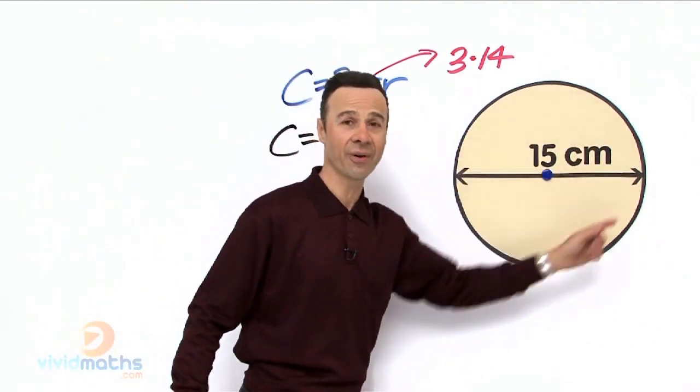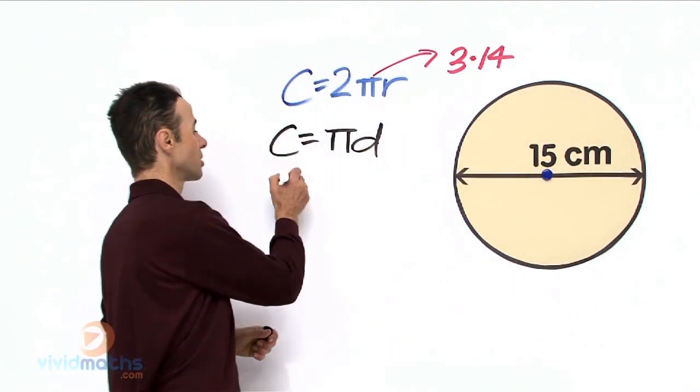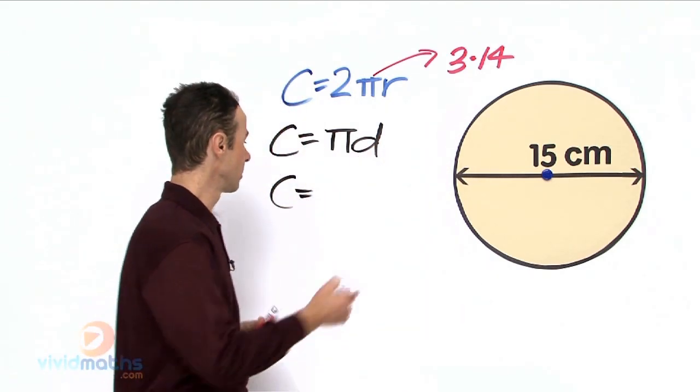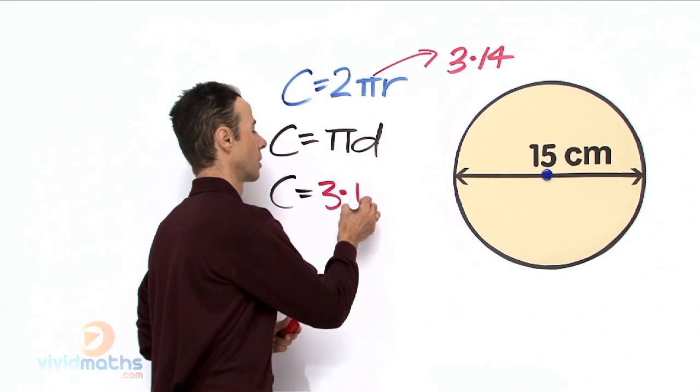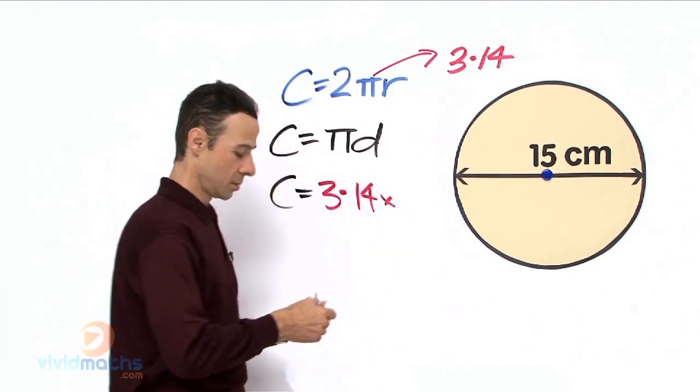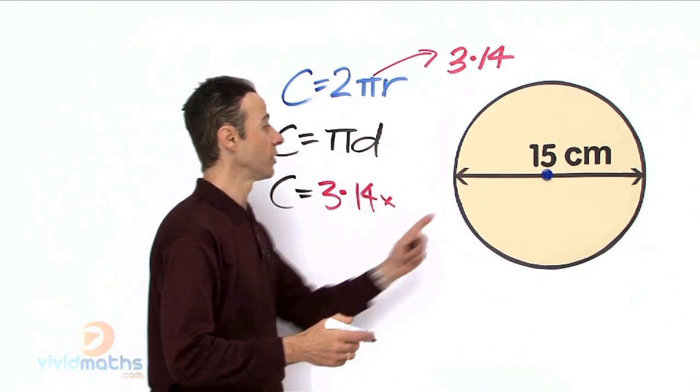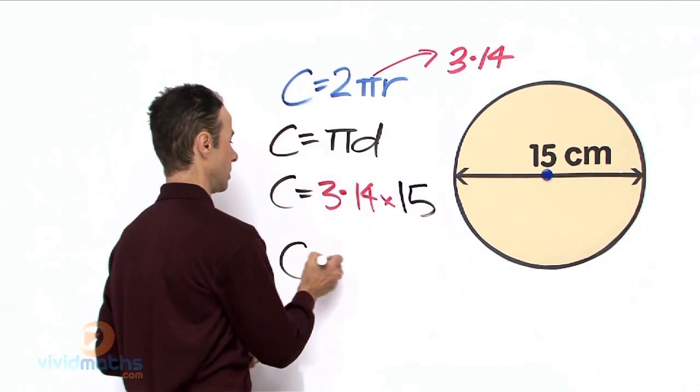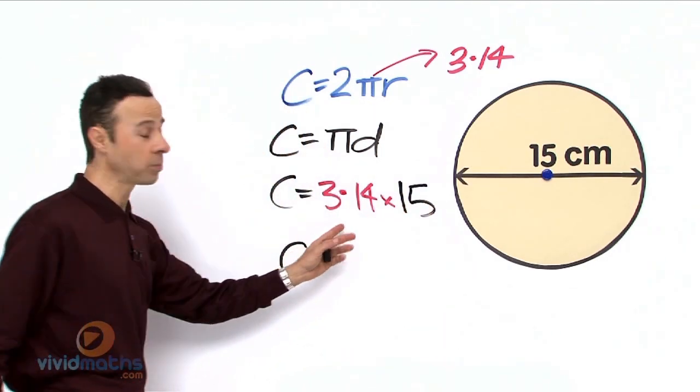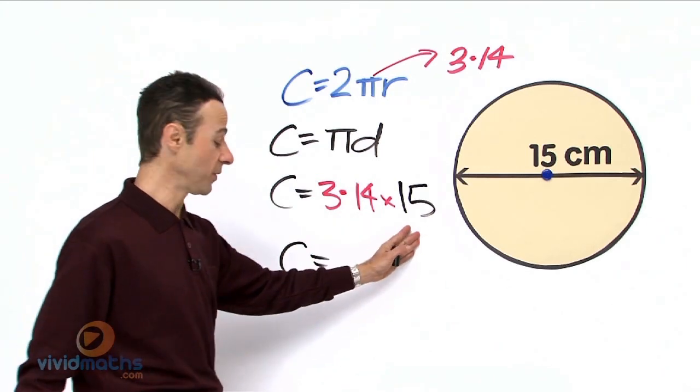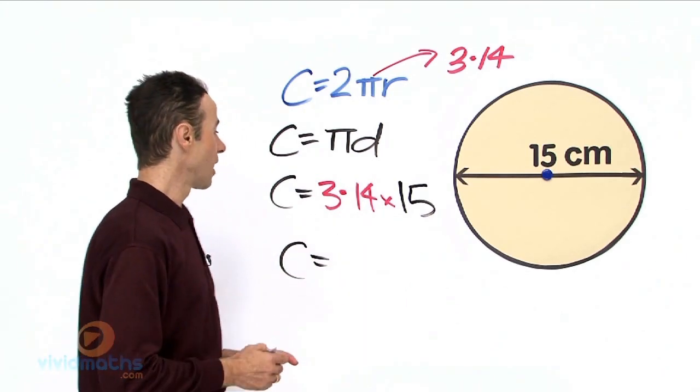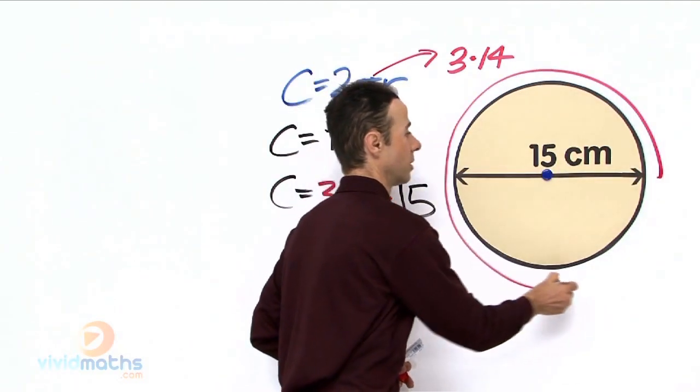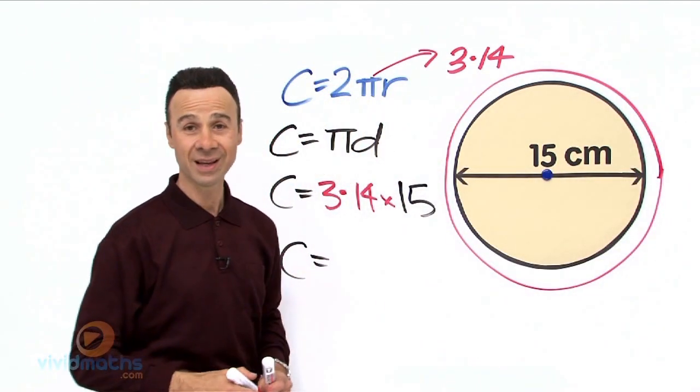So circumference equals pi, which is 3.14. Let us write that in, and the diameter is 15 cm. All we need to do now is multiply 3.14 times 15. That is going to yield the distance all the way around. The complete circumference is this.